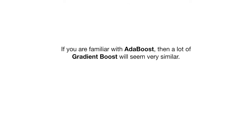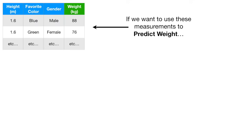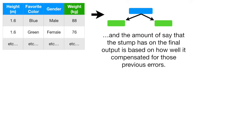If you are familiar with Adaboost, then a lot of Gradient Boost will seem very similar. So let's briefly compare and contrast Adaboost and Gradient Boost. If we want to use these measurements to predict weight, then Adaboost starts by building a very short tree called a stump from the training data. Then the amount of say that the new stump has on the final output is based on how well it compensated for those previous errors.